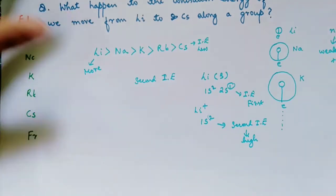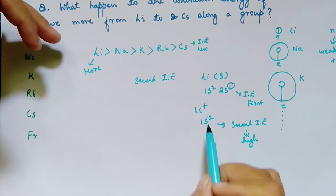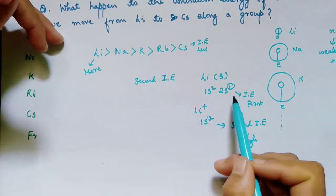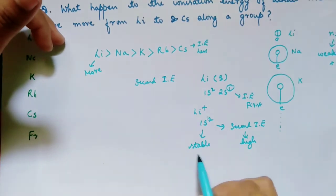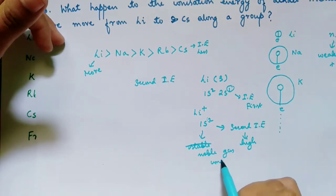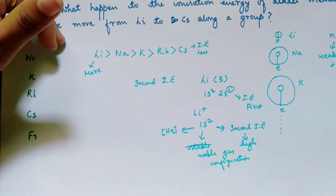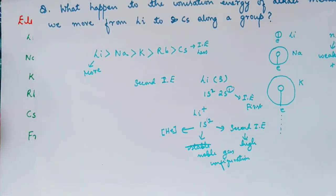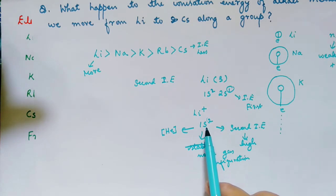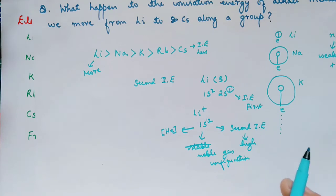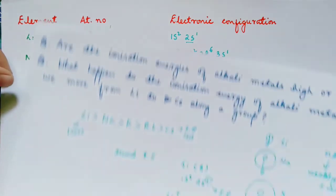Why are the second ionization energies of alkali metals very high? Because, as in this example, when you have removed one electron, the ion has attained the 1s² configuration. This configuration is a stable noble gas configuration — it is the configuration of helium, and helium is a noble gas. We know that noble gases are stable. That's why, if you want to remove another electron from this 1s² orbital, which is the second ionization energy, it will be very, very high because of the stable noble gas configuration. The same applies to the other elements — sodium, potassium, rubidium, and so on.